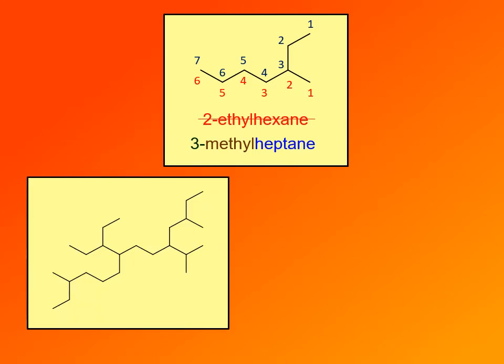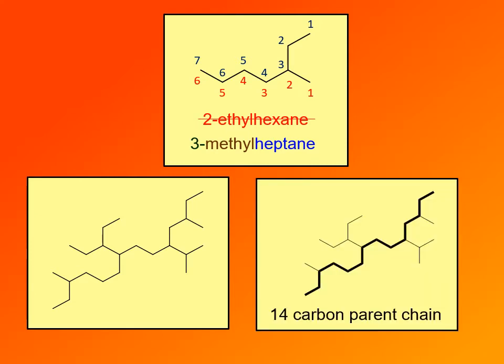Here we have a very complex compound. An exam question might ask how many carbons the longest chain has, or how many carbons the root name will have. When you find the longest chain and count the carbons in that chain, the parent chain or root of the name has fourteen carbons.